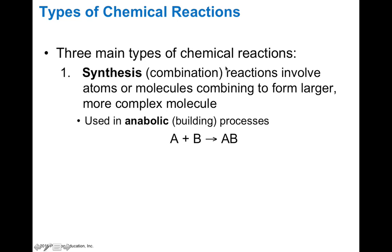There are three major types of chemical reactions. First, we have synthesis reactions, which involve atoms or molecules that combine to form larger, more complex molecules. An example of a synthesis reaction would be an anabolic or building pathway where molecule A plus molecule B make molecule AB, or atom A plus atom B make molecule AB.